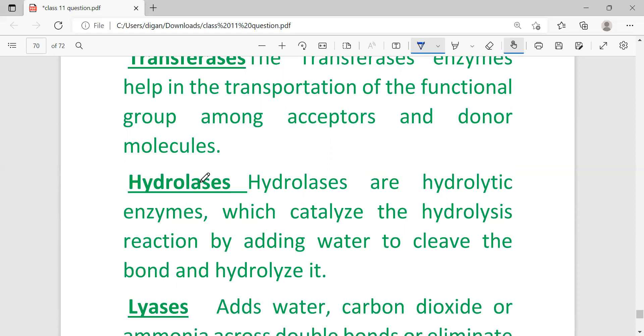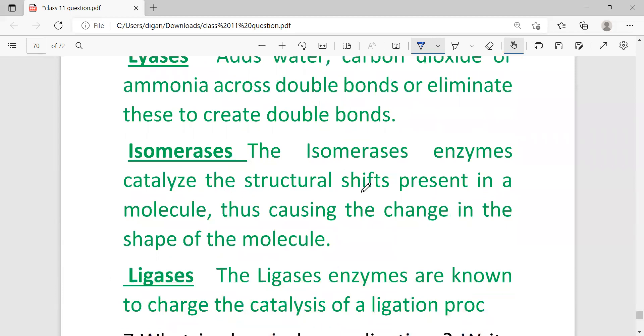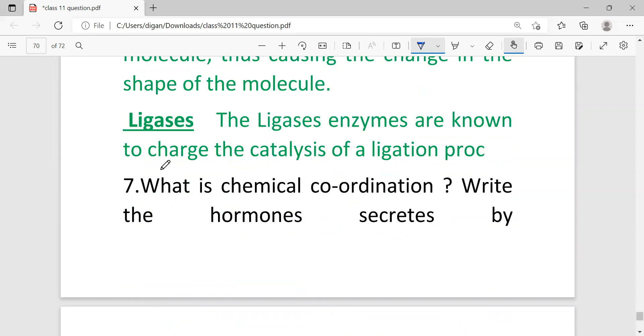Hydrolase: hydrolytic enzyme. Hydrolysis reaction takes place by addition of water, that's why the name hydrolase is used. Lyase: adds carbon dioxide or ammonia across double bonds or eliminates this to create double bonds. Isomerase: the isomerase enzyme catalyzes the structural shifts present in a molecule, thus causing changes in the shape of the molecule. Ligase: the ligase enzymes are known to catalyze ligation.